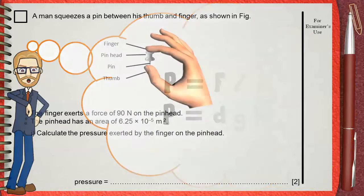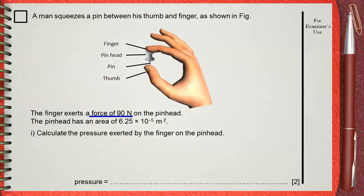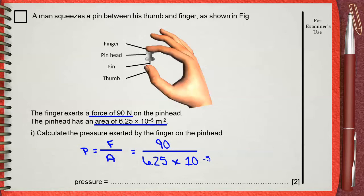It's clear that in this question we have the force, which is 90 newtons, and the area, which is 6.25 times 10 to the power negative 5 meter squared. So, pressure equals force over area is suitable for this. By dividing the force 90 by the area 6.25 times 10 to the power negative 5, the answer is 1.44 times 10 to the power 6 pascals.